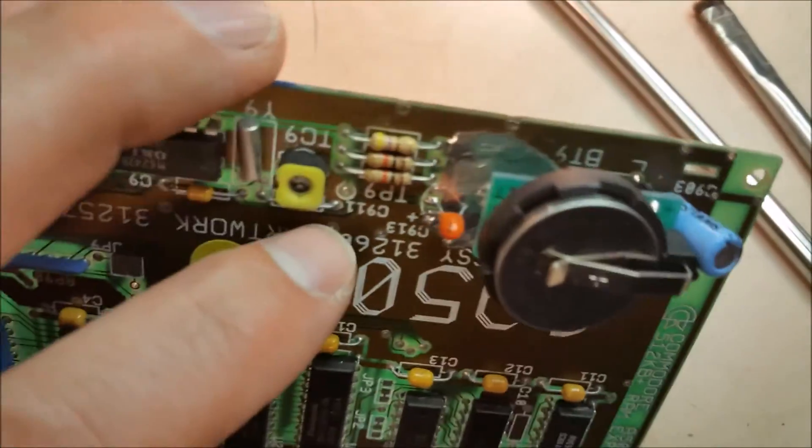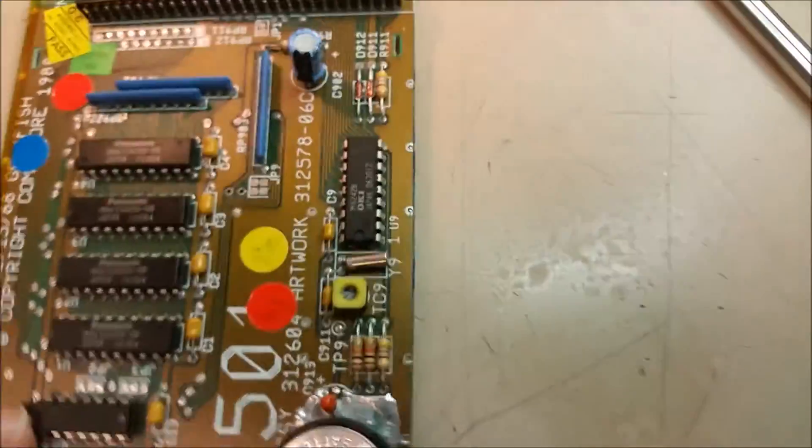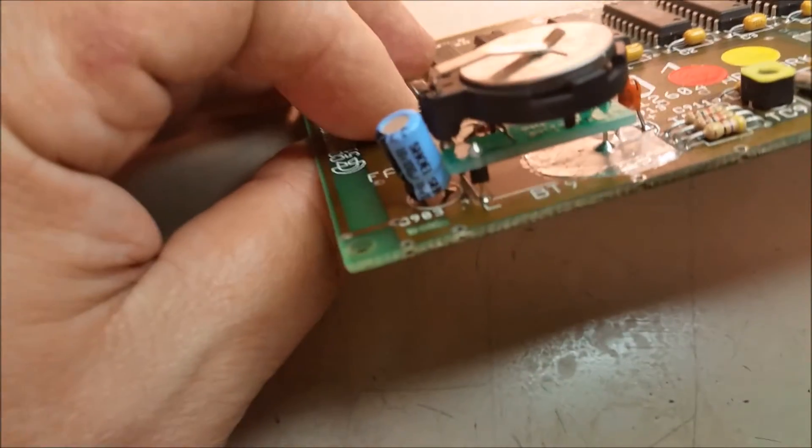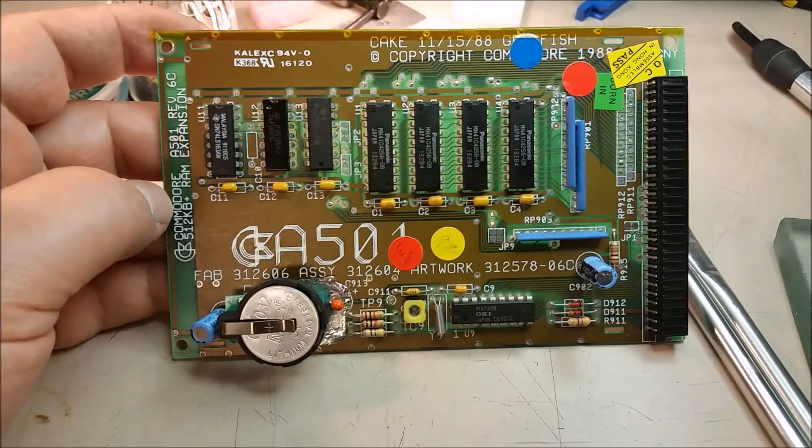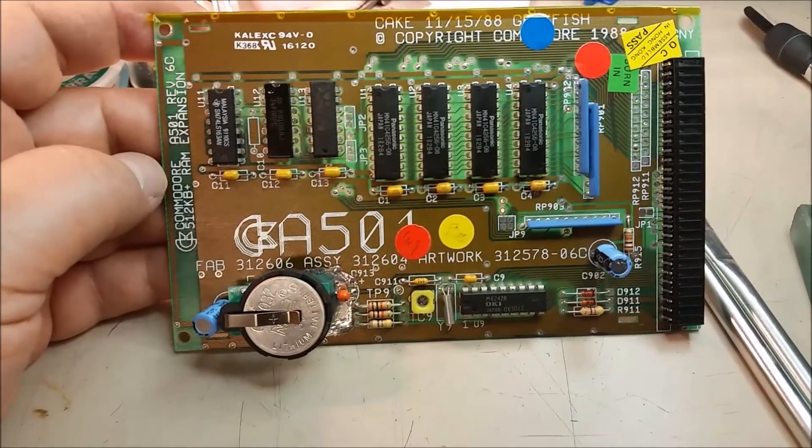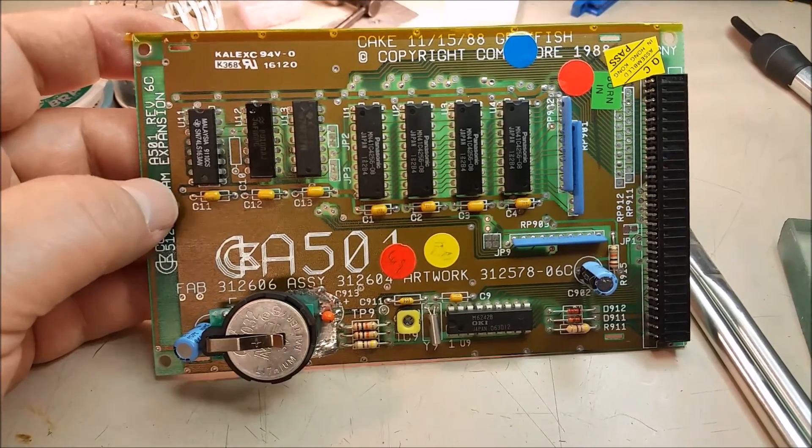So all I have to do now is get some epoxy and put it over that area where I put that copper patch right there. This would definitely allow this board to work for many, many more years and hopefully my friend really enjoys that.